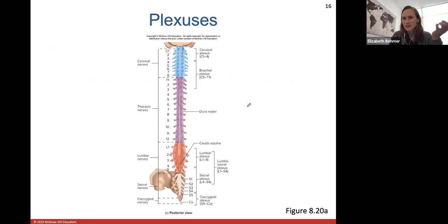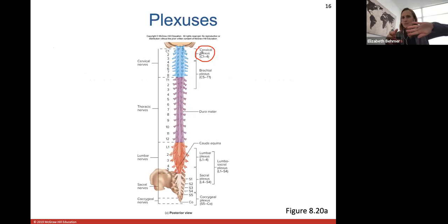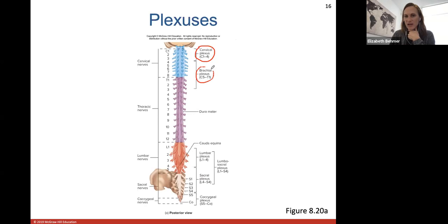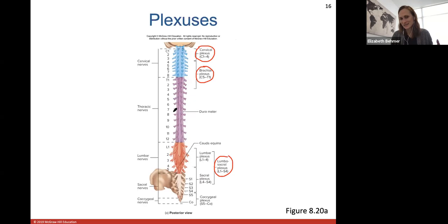The lumbosacral plexus originates from nerves L1 to S4 and supplies nerves to all the lower limbs. Here's a look at these plexuses — the cervical plexus, the brachial plexus, and the lumbosacral plexus at the bottom. You also have a coccygeal plexus, which we don't talk about too much. Basically, the brachial plexus goes to the upper limb and the lumbosacral plexus goes to the lower limbs. The thoracic spinal nerves don't form plexuses.